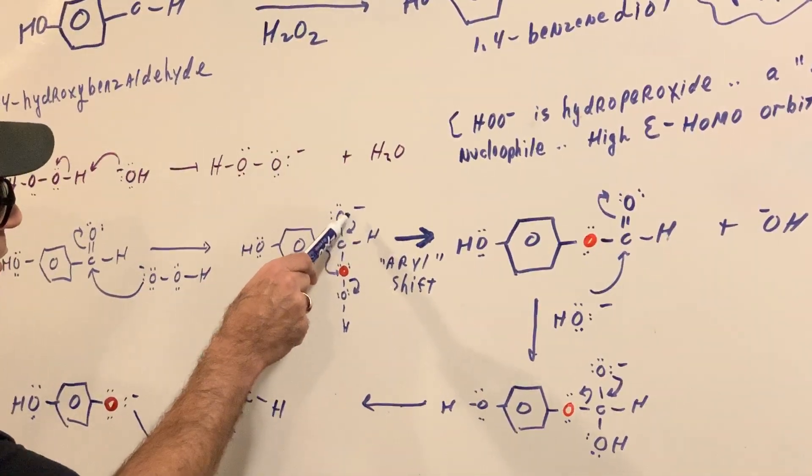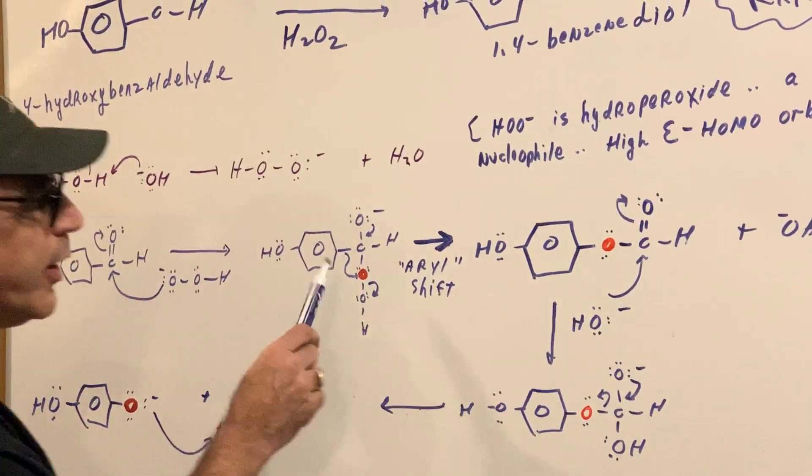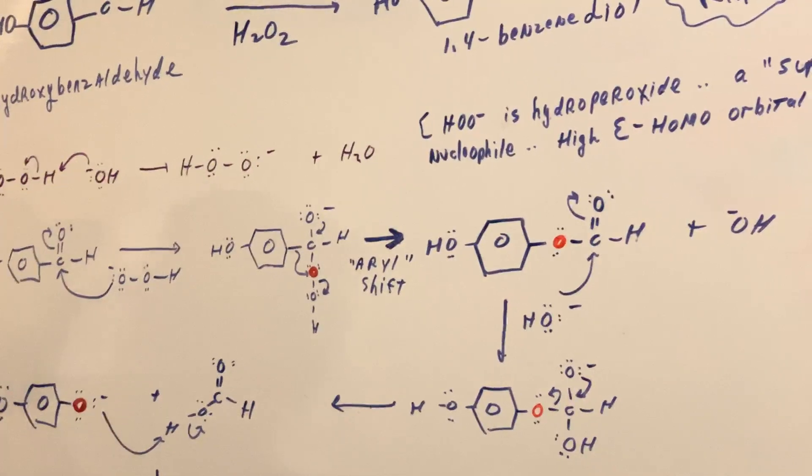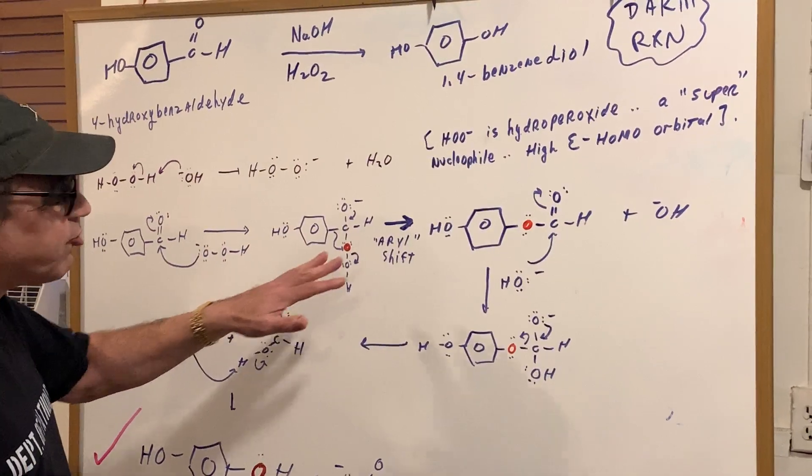I'm going to make three movements. This is going to move down. This is going to shift and this moves out. When you did that, that gives me this compound here and you're about home. So that was the tricky part. This is an arrow shift.